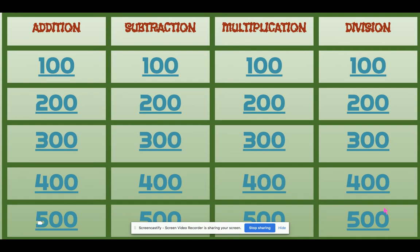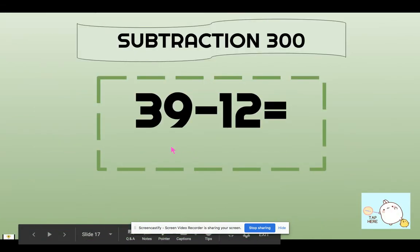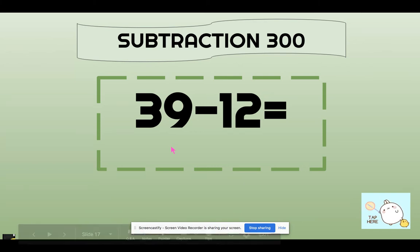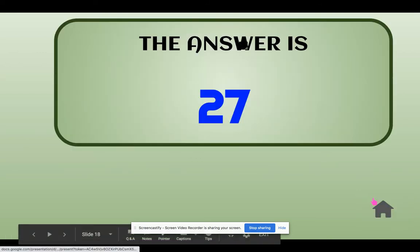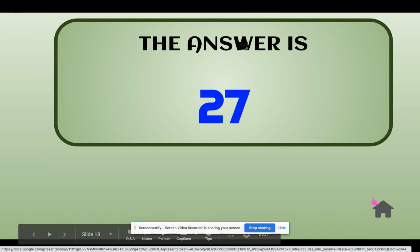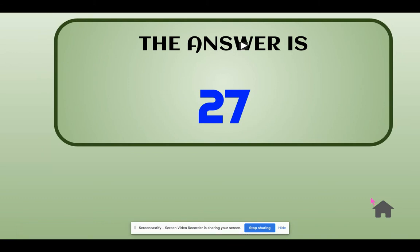Subtraction 300. The question is 39 minus 12. The answer is 27.